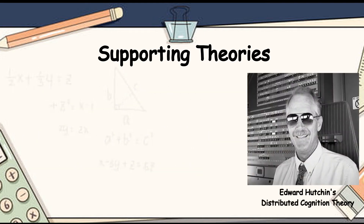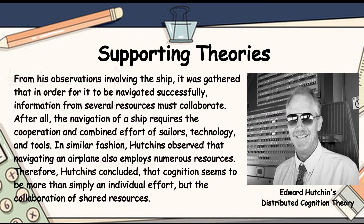In Hutchins' distributed cognition theory, from his observation involving a ship, it was gathered that in order for it to be navigated successfully, information from several resources must collaborate. The navigation of a ship requires the cooperation and combined effort of sailors, technology, and tools. In similar fashion, Hutchins observed that navigating an airplane also employs numerous resources. Therefore, Hutchins concluded that cognition seems to be more than simply an individual effort, but the collaboration of shared resources.